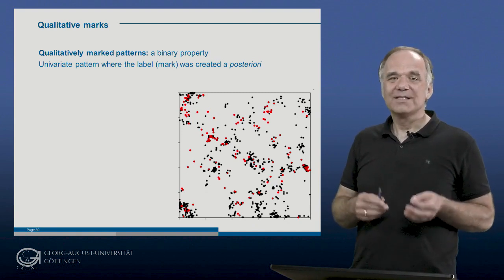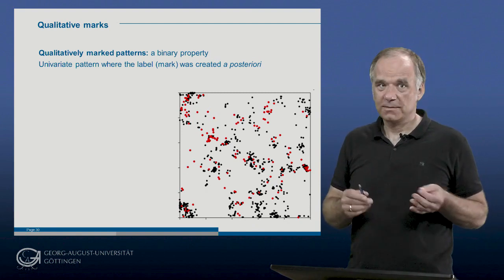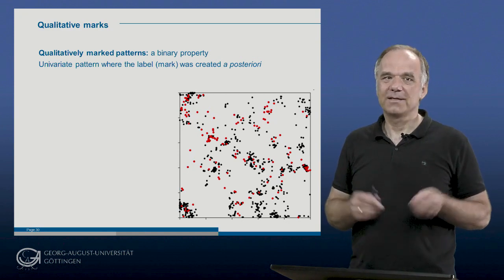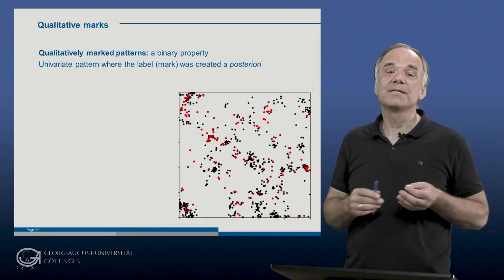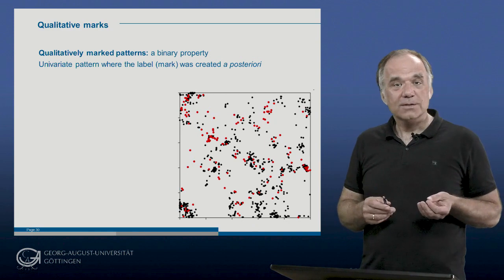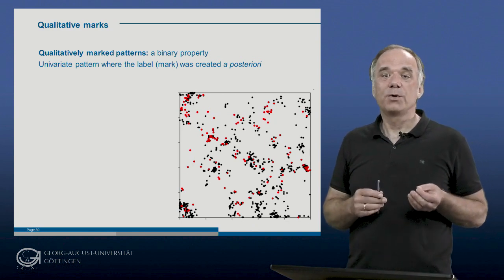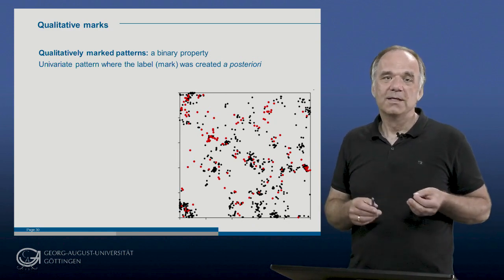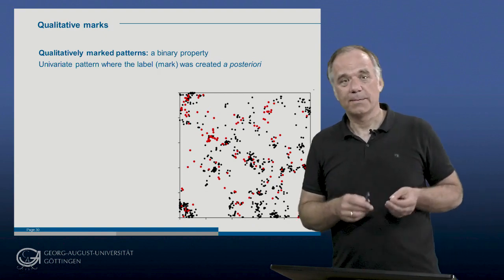but our data contain additional information on each point. This information is generally called a mark. Here we have a specific type of mark: a binary or qualitative mark. The analysis of qualitatively marked point patterns assumes that the pattern was created in two different steps.